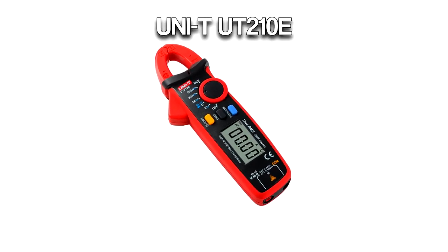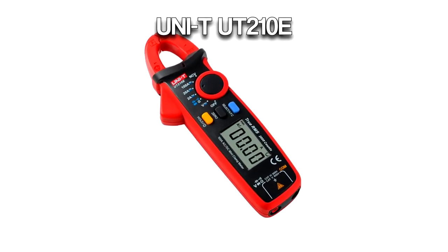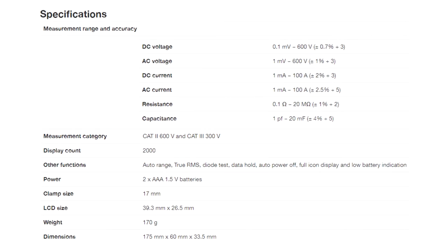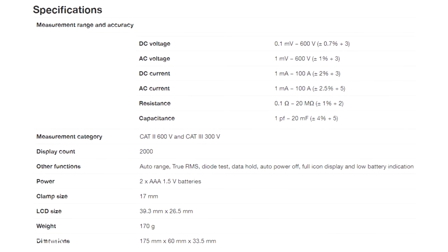For a good price, you can already get a current clamp. Take, for instance, this Unity UT-210E. For a fairly cheap price, you can already measure all the basic things you would use a current clamp for normally.